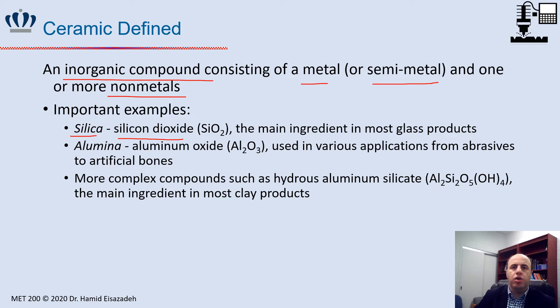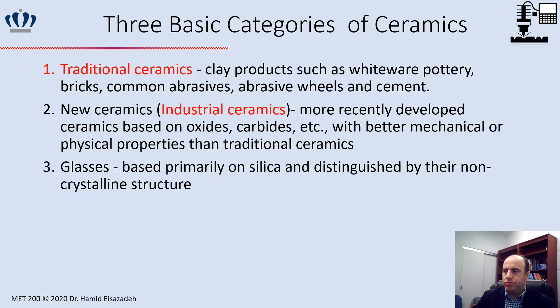Another example of ceramic is alumina, or aluminum oxide (Al2O3), which has applications in abrasives as well as artificial bones. A more complex ceramic compound is hydrous aluminum silica, which is the main ingredient in most clay products.